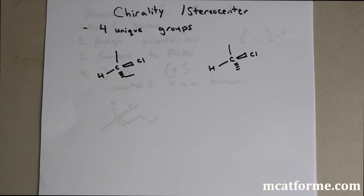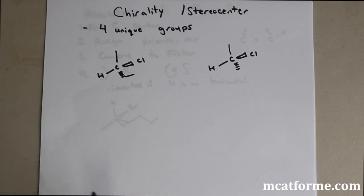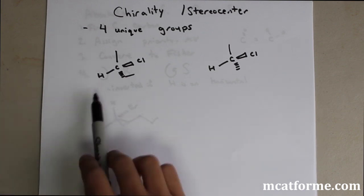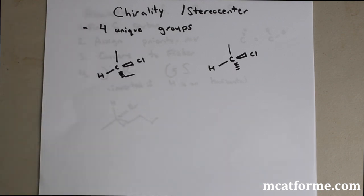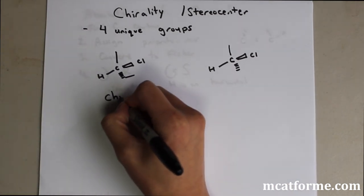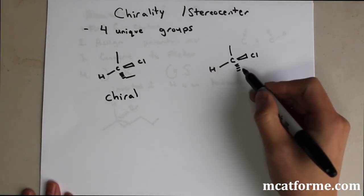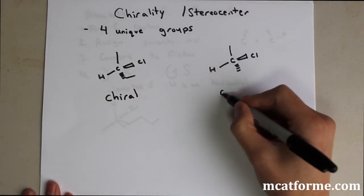We're going to be looking at chirality and stereocenters — some types of isomers. For a molecule to be chiral, it has to have four unique groups around it. We'll look at these two molecules. One is chiral and one is achiral, meaning not chiral. This one has hydrogen, ethyl, methyl, and chlorine — four unique groups, so it's chiral. This other one has two methyls, so it's achiral.